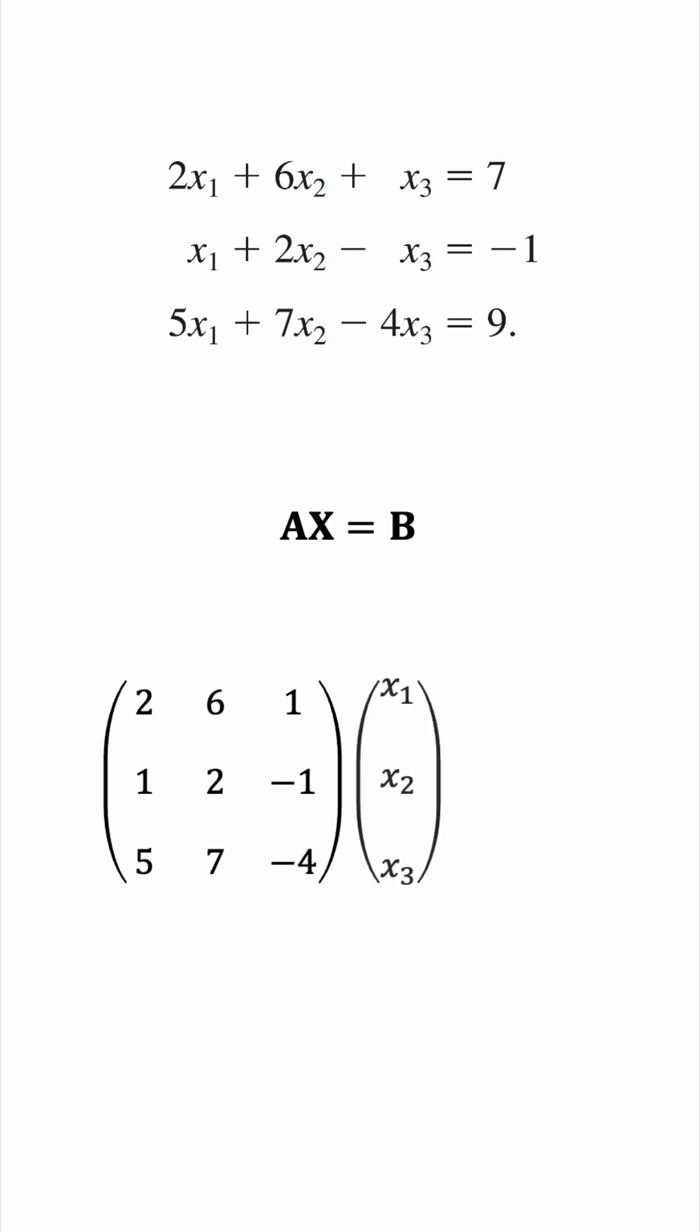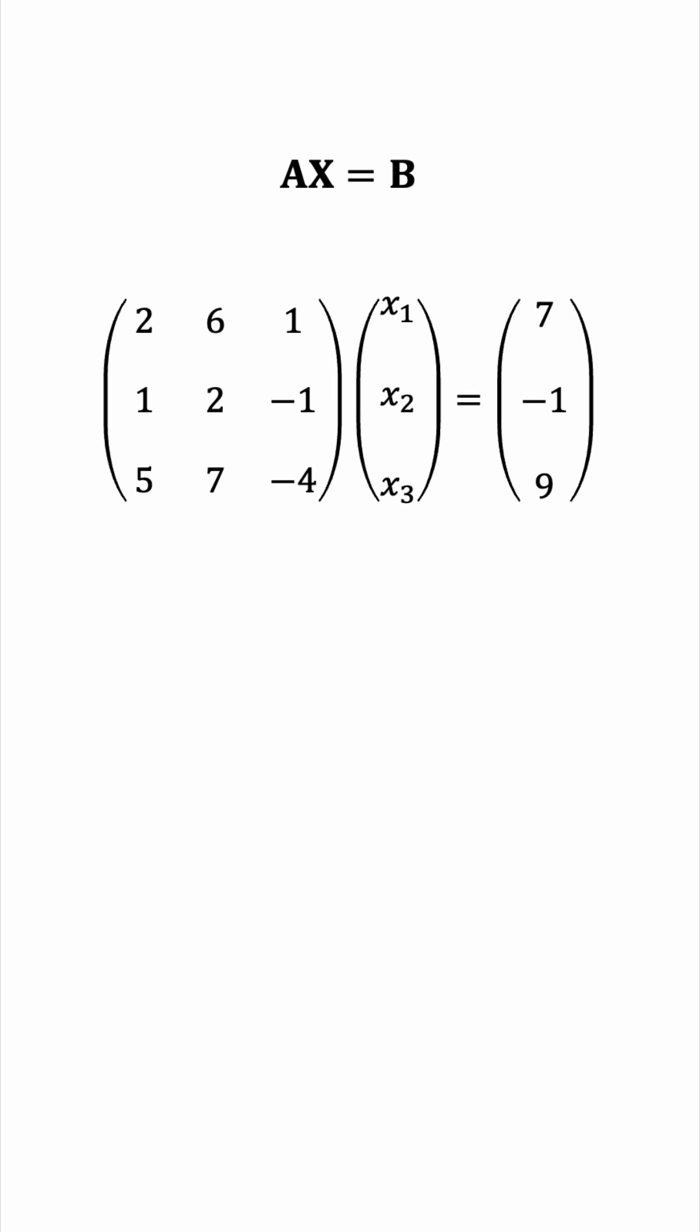x is the vector of unknowns and b is the vector of constants. Notice that the symbols we use for the variables are not important. x1, x2, x3 is the same as x, y, z, a, b, c, whatever.